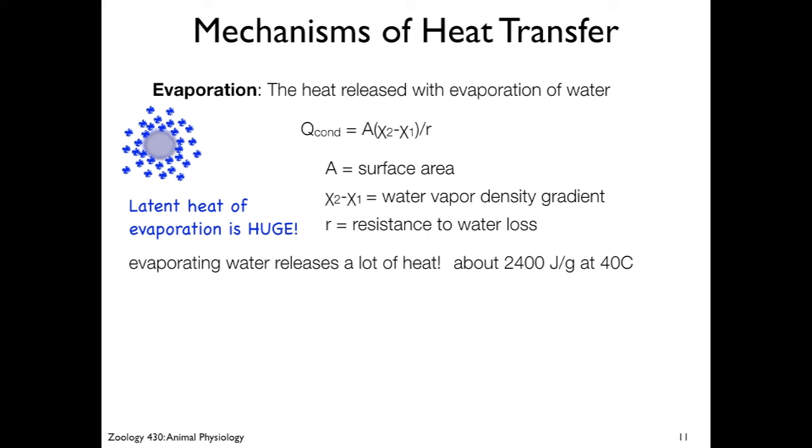Why this is such an important mechanism is because the latent heat of evaporation is huge. In other words, evaporating water releases a lot of heat, about 2,400 joules per gram at 40 degrees Celsius. That's a little hotter than most living things, but it's close. It's huge. Alternatively, it only takes about 480 joules per gram to heat water from freezing to boiling. So it's only 480, but it's 2,400 from liquid to gaseous phase. It's pretty amazing. And so this is essentially a property of water.